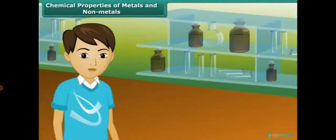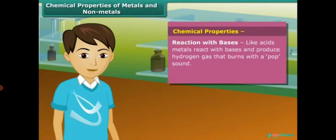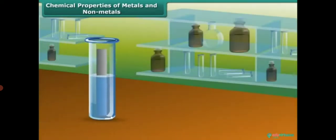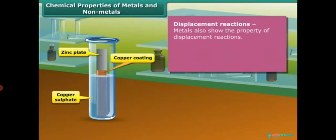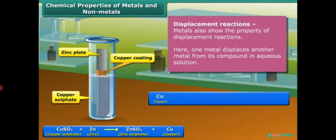Students, you will be surprised to know that like acids, metals also react with bases and produce hydrogen gas. Non-metals react with bases complexly besides these chemical reactions. Metals also show the property of displacement reactions. We can see a displacement reaction here in which one metal displaces another metal from its compounds.